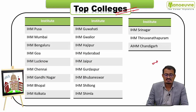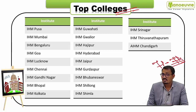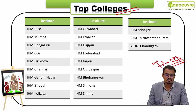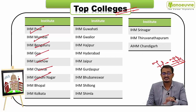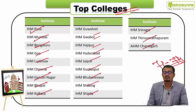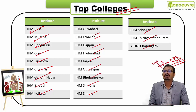Around 71 to 74 institutes accept the NCHMCT JEE score — central sponsored, state sponsored, PSU, private, and food craft institutes. The top central IHMs include Pusa, Mumbai, Bangalore, Goa, Lucknow, Chennai, Gandhinagar, Ahmedabad, Bhopal, Kolkata, Guwahati, Gwalior, Hajipur, Jaipur, Gurdaspur, Bhubaneswar, Shillong, Shimla, Srinagar, Thiruvananthapuram, and Chandigarh — 21 IHMs total.